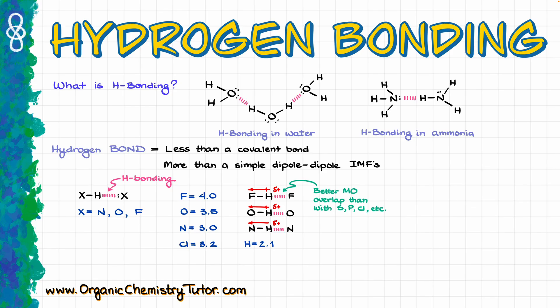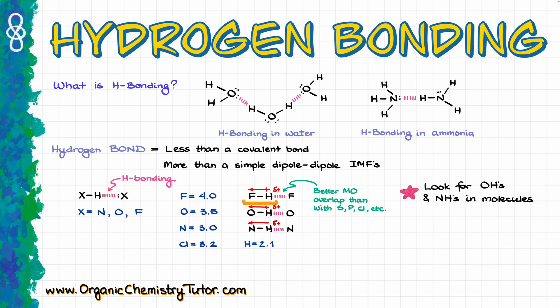The second reason is that second-period elements such as fluorine, oxygen, and nitrogen have much better molecular orbital overlap than elements from further periods like sulfur, phosphorus, or chlorine. Because of the poor molecular orbital overlap with atoms like chlorine, we don't really see much hydrogen bonding with larger elements. And within organic molecules, HF is a standalone molecule, so we won't really be looking at HF.